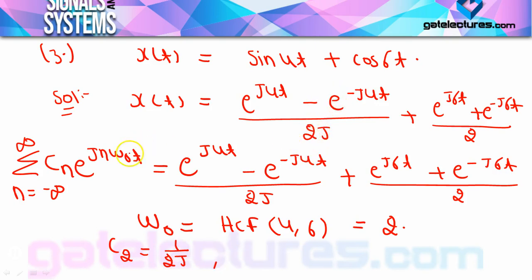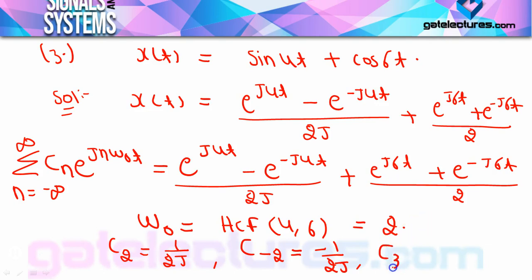For the second term, e^(−j4t): nω₀ = −4, so n = −2, giving c₋₂ = −1/(2j). For the third term, e^(j6t): nω₀ = 6, n = 3, so c₃ = 1/2. For the fourth term, e^(−j6t): n = −3, so c₋₃ = 1/2. The coefficients c₂, c₋₂, c₃, c₋₃ are present, meaning the second and third harmonics are present.